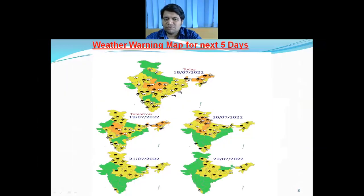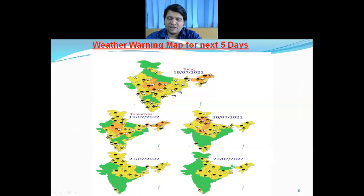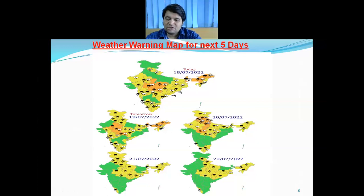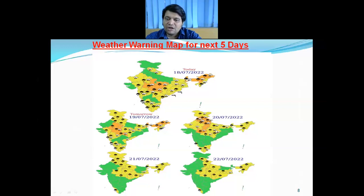The monsoon trough is very likely to shift further northward, and there is a likelihood of a spell of rainfall over Punjab, Haryana, Uttar Pradesh, north Rajasthan, and the Himalayan region — that is Jammu & Kashmir, Himachal Pradesh, and Uttarakhand. There is a likelihood of isolated heavy rainfall over J&K, HP, and Uttarakhand from 19th to 22nd July. Himachal Pradesh and Uttarakhand are likely to receive isolated heavy to very heavy rainfall on 20th July, and Uttarakhand may receive very heavy rainfall at isolated places.